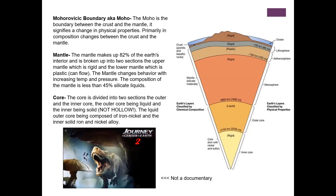Next we have the Mohorovičić discontinuity, also known as the Moho. This is not necessarily a layer but it is a very important boundary between the crust and the mantle, signifying a change in physical properties. The crust is very rigid, and when we get to the mantle it becomes much less rigid.